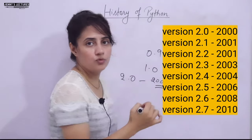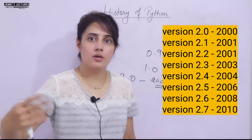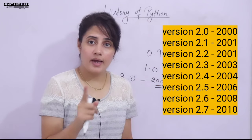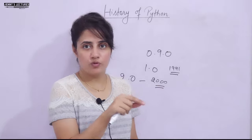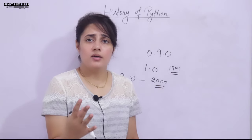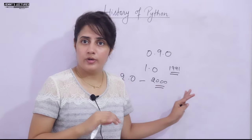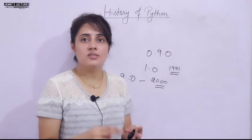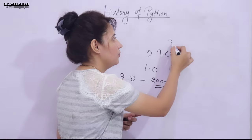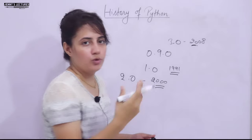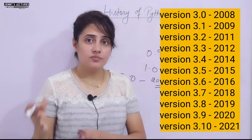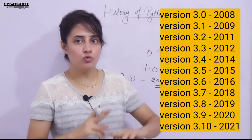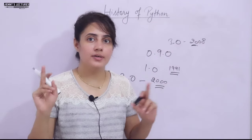Version 2.0 was released in 2000, followed by versions 2.1, 2.2, 2.3, up to 2.7 in 2010. They announced that on January 1st, 2020, they would end support for the 2.x version. The current version is 3.x. Version 3.0 came in 2008, followed by 3.1, 3.2, and so on, with the latest version being 3.10, released in 2021.